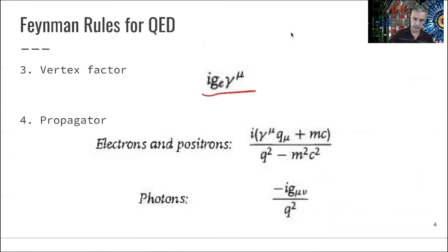We have a vertex factor. Here, g_e is a constant and a dimensionless property, but we have to have a gamma-mu as part of our vertex factor.